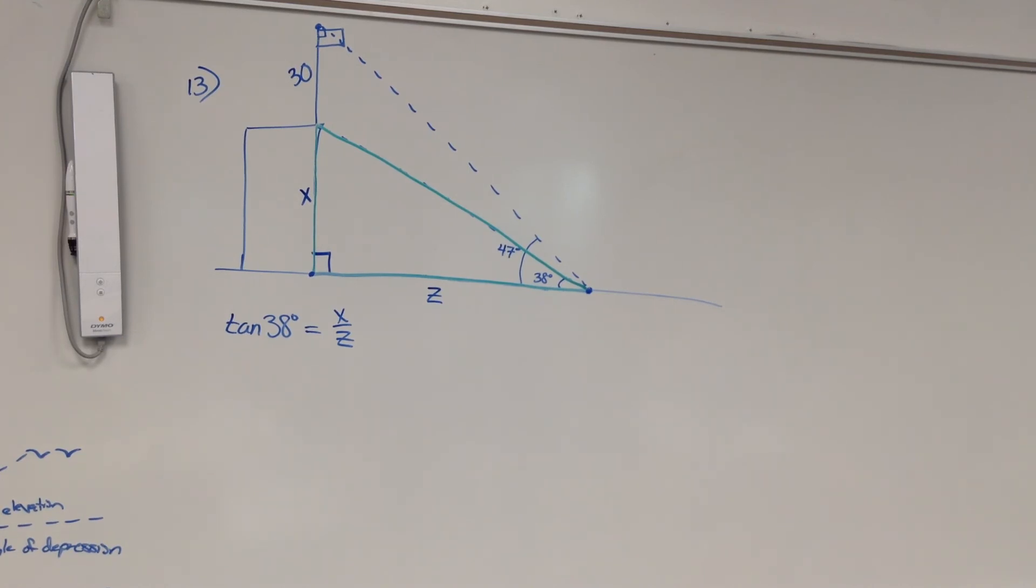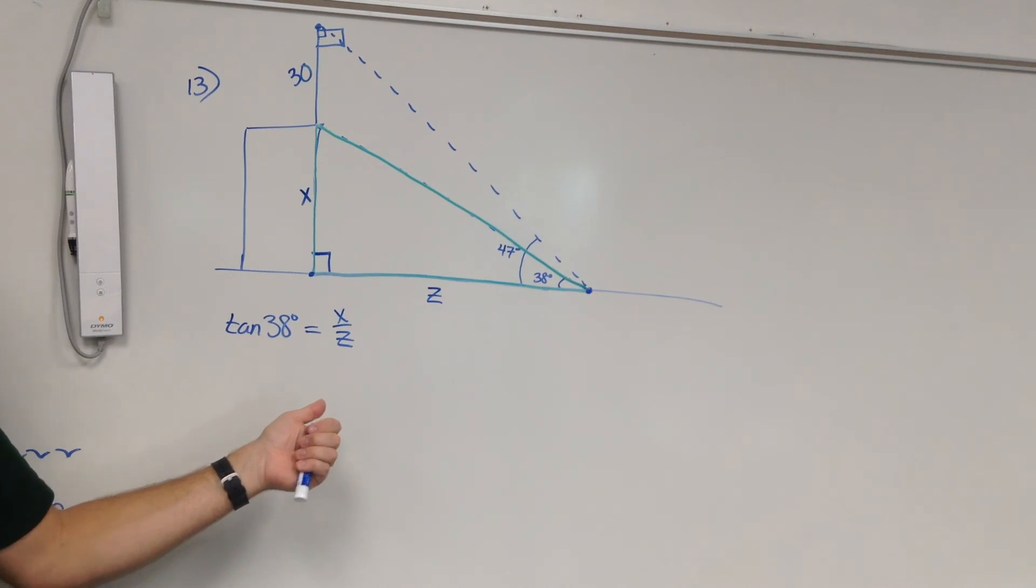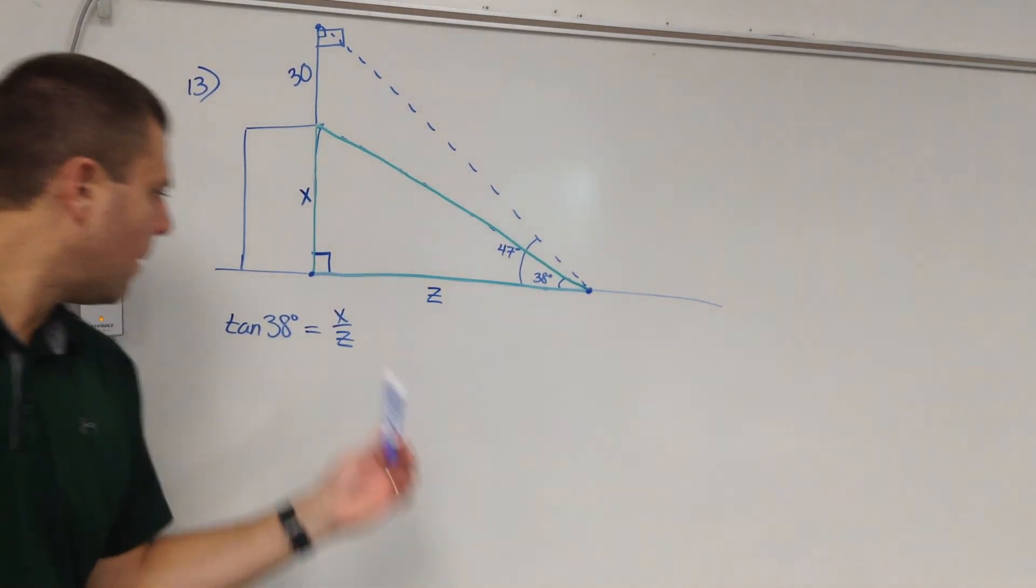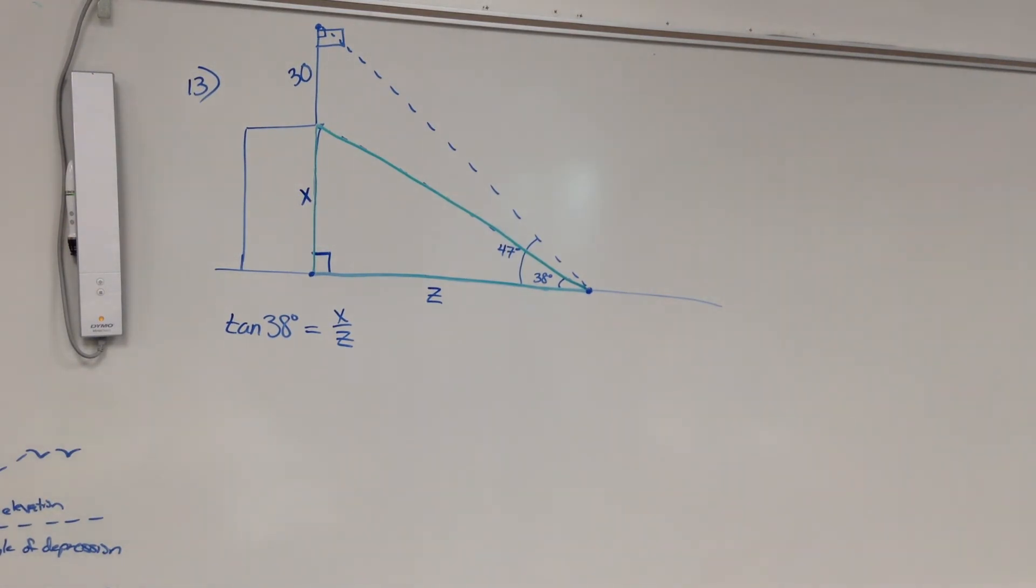Now, when I've got two variables, I'm not able to solve that and get a numerical answer for either X or Z. I can get X by itself, but it's not going to be a number. It's still going to have a variable in it. I can multiply both sides by Z to get X by itself, but I still won't have a numerical answer for X. It'll be X equals Z times tangent 38. You can't do anything with that until you know what Z is. So unfortunately, there's not much I can do with this. If you have one equation that has two variables, let's try to write another equation that will also have those same two variables in it, because then we can solve by substitution.